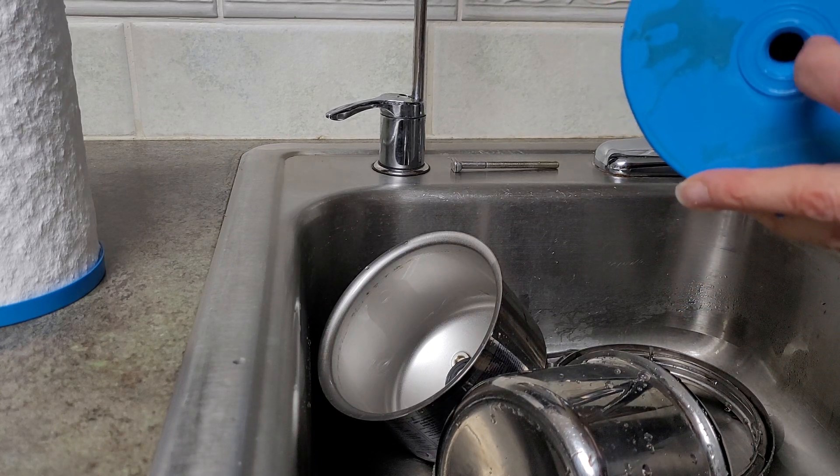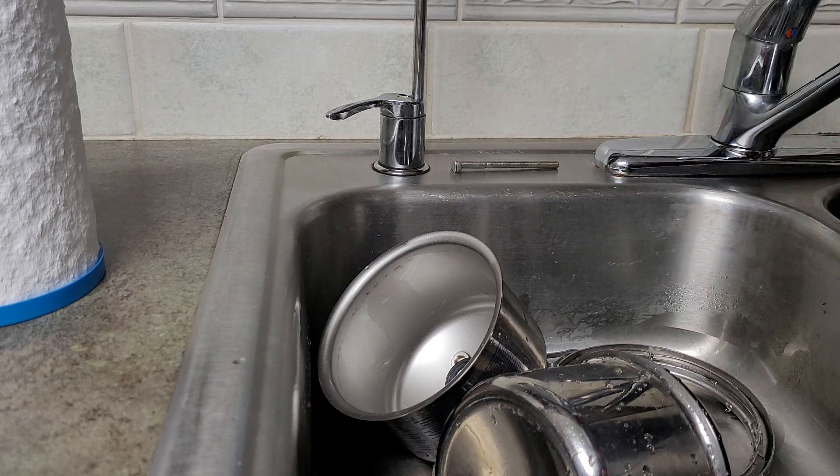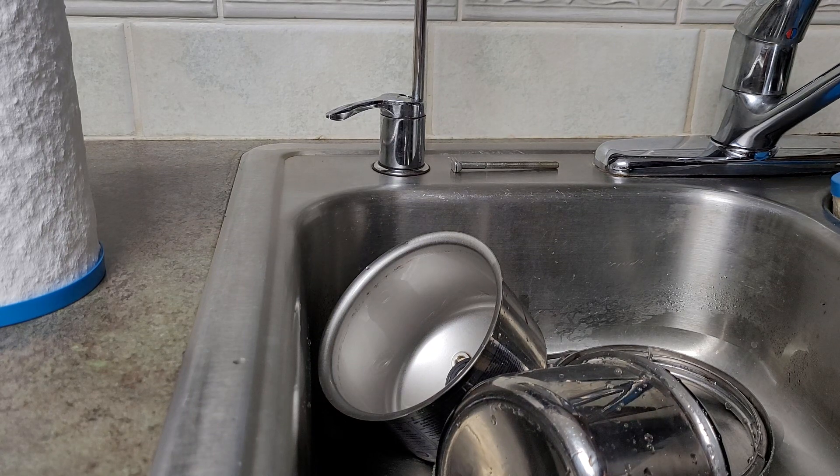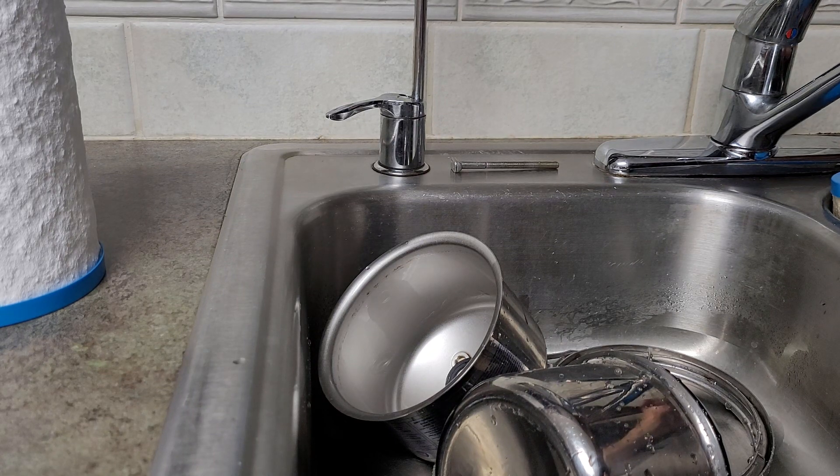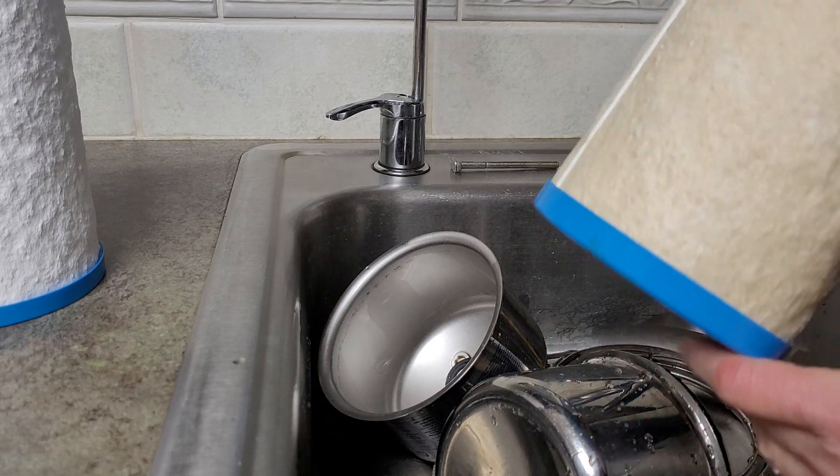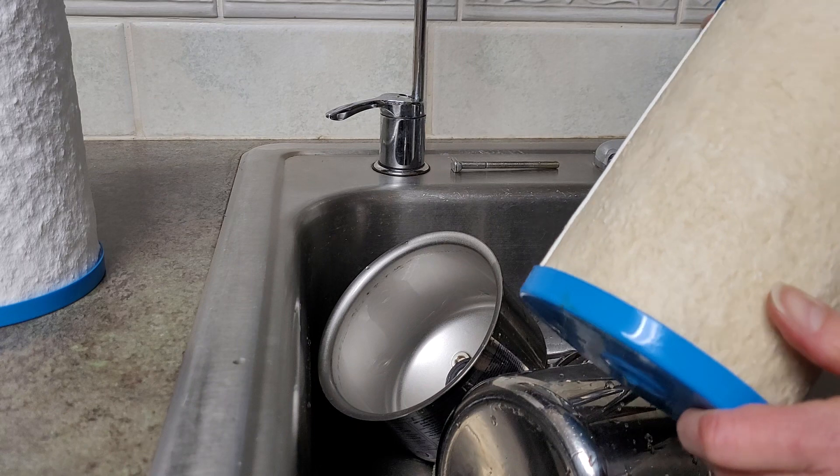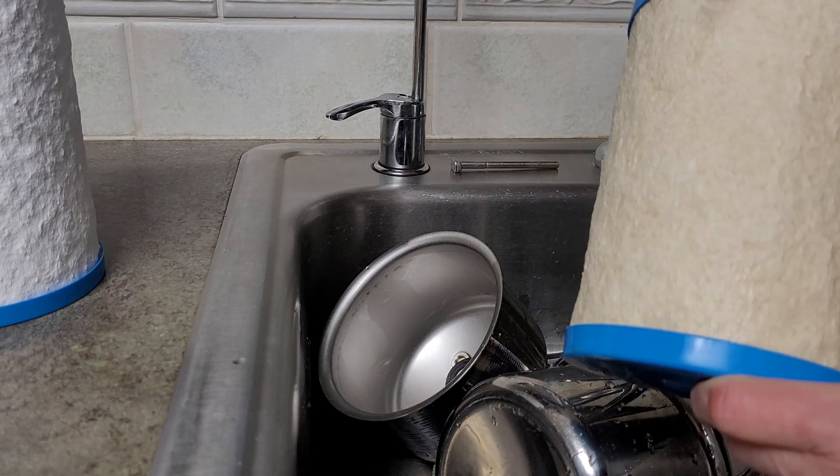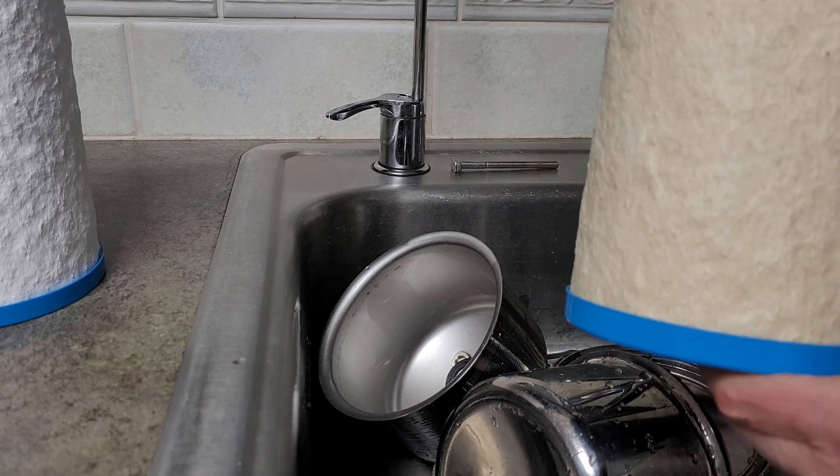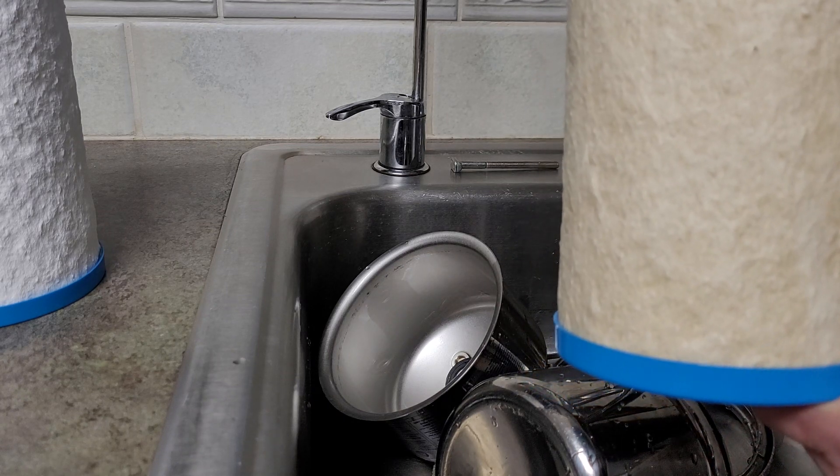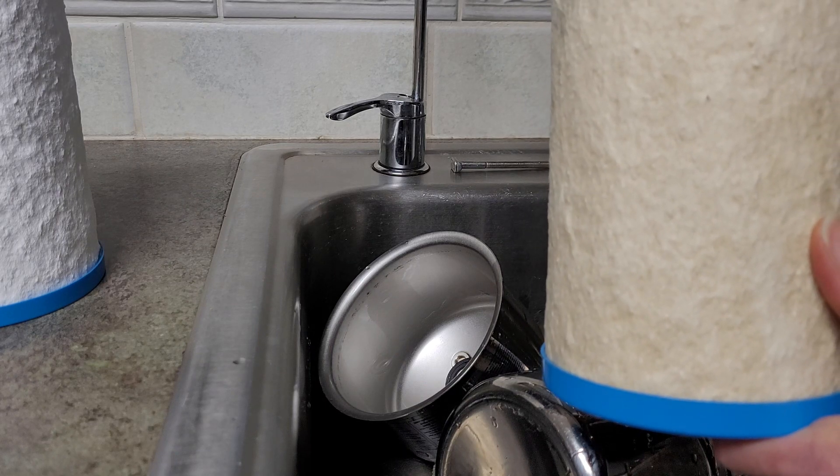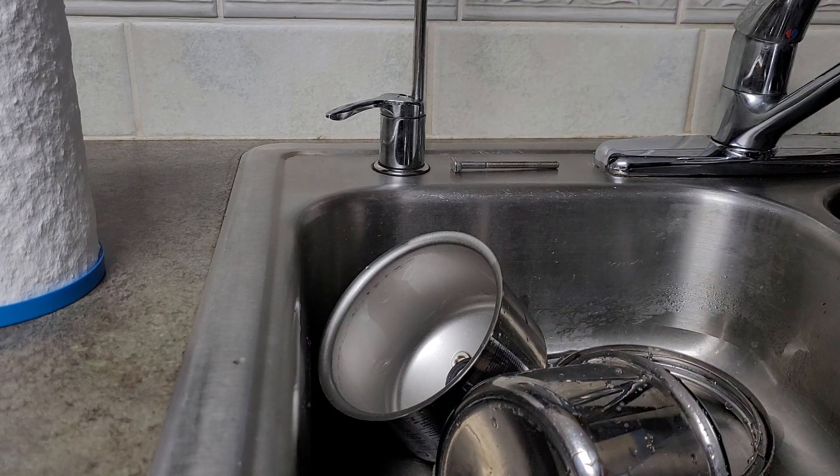Now we're simply unscrewing the top half of the housing from the filter. We've got that all taken apart. The old cartridge, I usually just let it drain. I turn it upside down so the screw-in end is on the bottom and just let that drain a bit before I put it in the landfill.